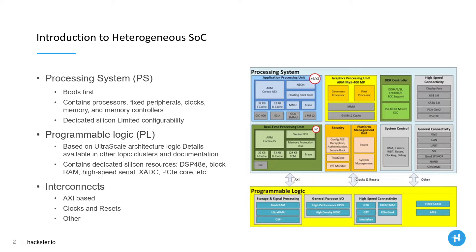We also have the ability to define clocks for the processing system and apply those into the programmable logic. There are four fabric clocks that we can configure — we set the clock frequency for the programmable logic, and with that come the resets necessary to reset the clock tree. There are also other interconnects including interrupts between the processor system and the programmable logic, and debug signals such that it's possible to place an integrated logic analyzer within the programmable logic, wait for it to trigger, and then break-point the software running in the processing system.